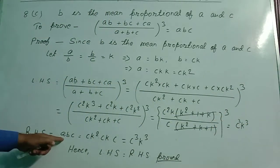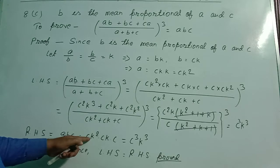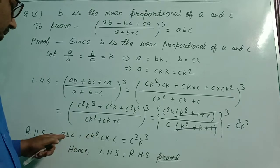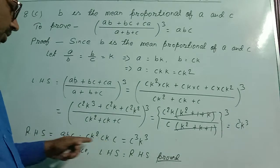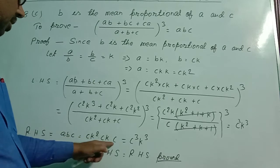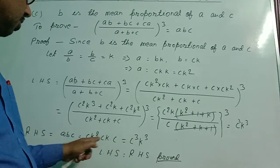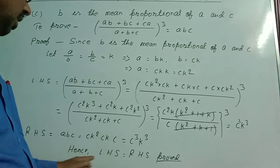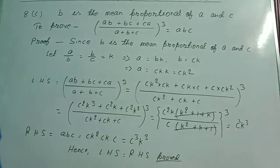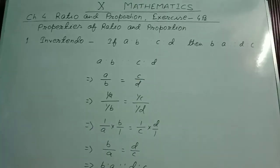Now I take RHS, which is abc. I kept the values: a = ck², b = ck, c = c. Multiplying these three: c · c · c = c³, and k² · k = k³. So RHS = c³k³. Therefore LHS = RHS, hence proved. After question number 8, questions 9, 10, and 11 are based on application but are not in our syllabus.